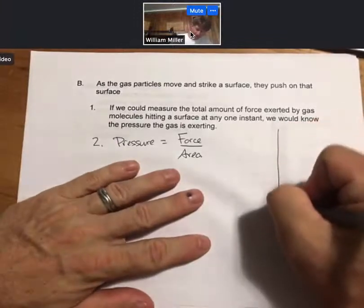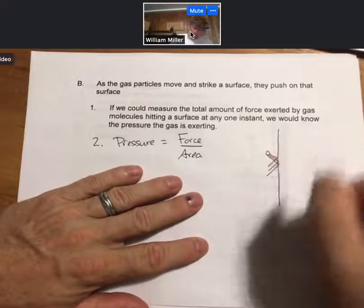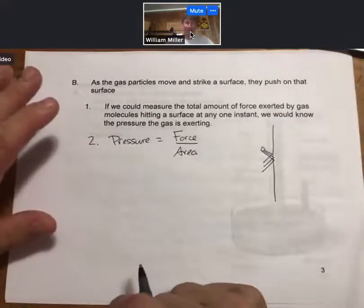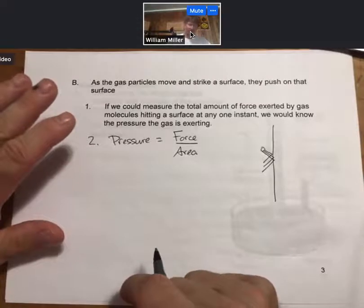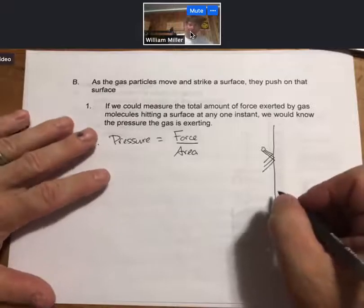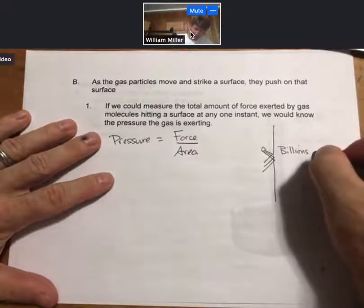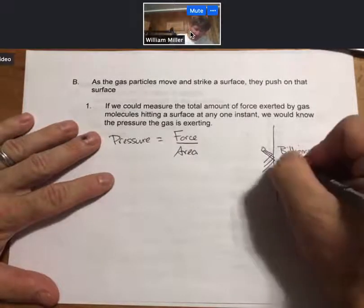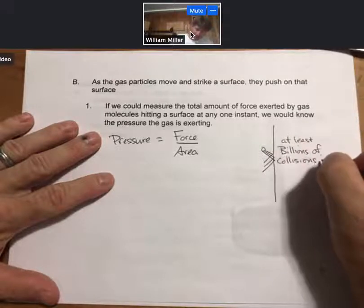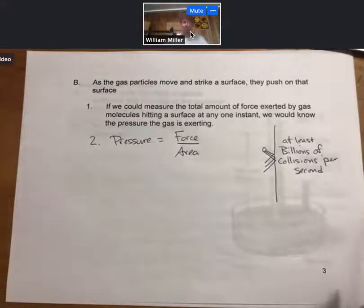Remember we drew the collisions with the wall of a gas phase molecule. In a very real way, though we cannot see the gas particles striking the surface, that's how pressure is created on surfaces through billions of collisions per second, at least billions of collisions per second. Even though each gas particle is relatively small, get enough of them together, it creates a measurable pressure.